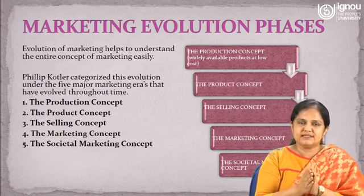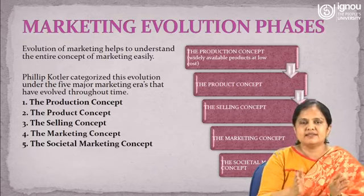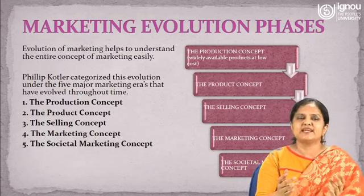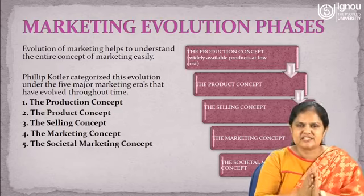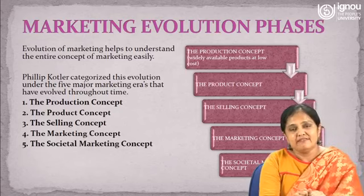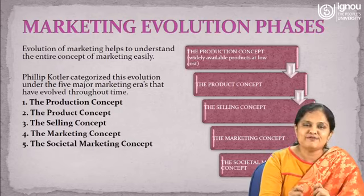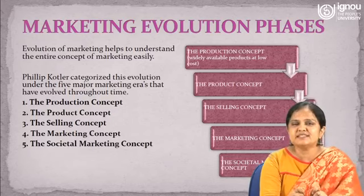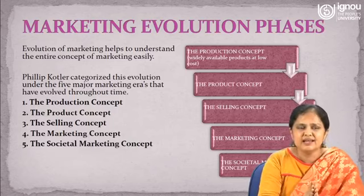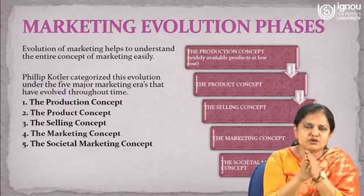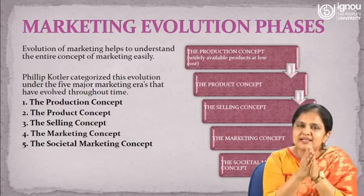Let us see what the scenario was in the pre-industrial revolution era. Since time immemorial, trade has been taking place and commerce has existed. When there was no medium of exchange such as money, barter system was there in the market. Barter system means use of one commodity for exchange of another commodity. Two parties would meet together, they would have something to offer each other and that something would have some value, and then they would offer it to each other.